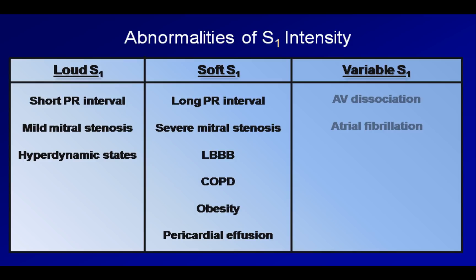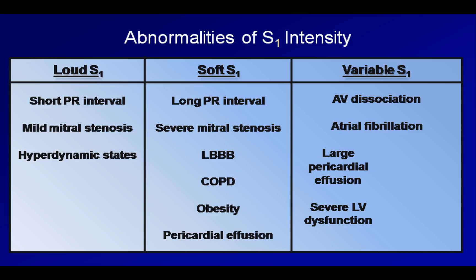Here is a recording from a patient in complete heart block and its associated AV dissociation. Atrial fibrillation leads to variable intensity due to varying RR intervals and thus varying strengths of contraction. While these two lead to an unpredictable pattern of intensity variation, a large pericardial effusion and severe LV dysfunction can lead to a pattern in which a relatively loud S1 alternates with a relatively soft S1. This unusual finding is known as auscultatory alternans and is the correlate to pulsus alternans, where every other pulse is strong alternating with weak ones.